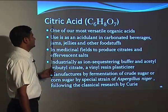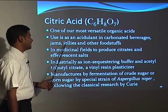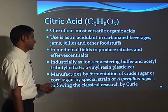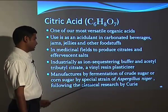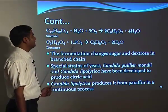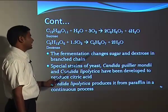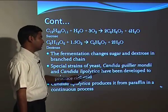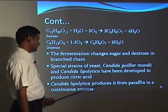Citric acid is one of the most versatile organic acids, used in carbonated beverages, jams, jellies, and other foodstuffs, and in medicinal fields to produce citrates and effervescent salts. Industrially, it is used as an ion sequestering buffer and as acetyl tributyl citrate, a vinyl resin plasticizer. It is manufactured by fermentation of crude sugar or corn sugar by a special strain of Aspergillus niger. Special yeast strains — Candida guilliermondii and Candida lipolytica — have also been developed to produce citric acid; C. lipolytica produces it from paraffin in a continuous process.